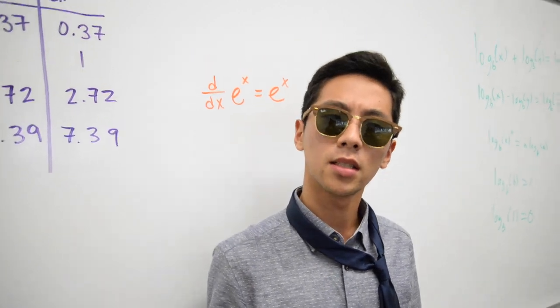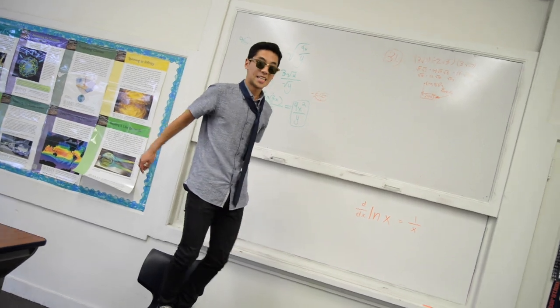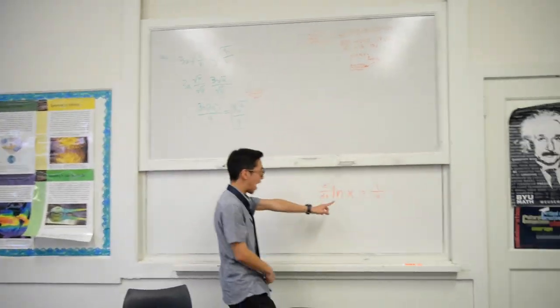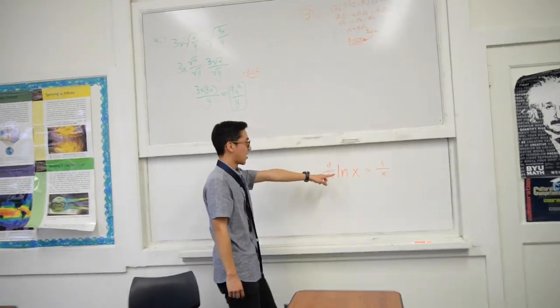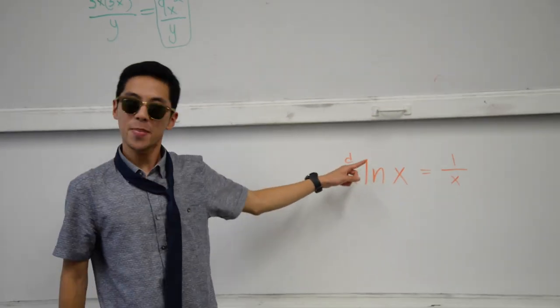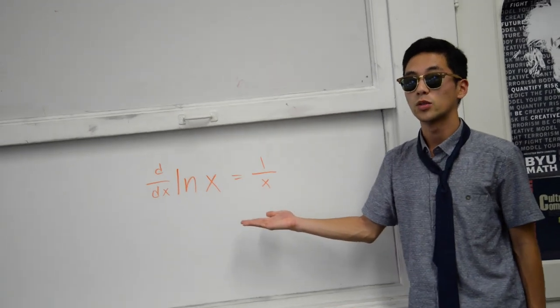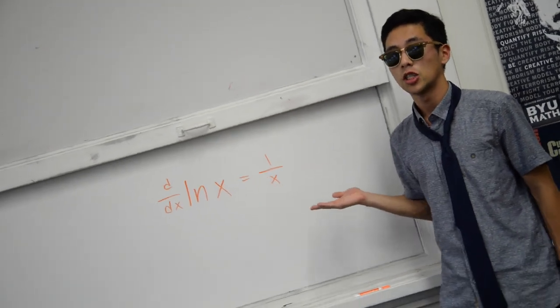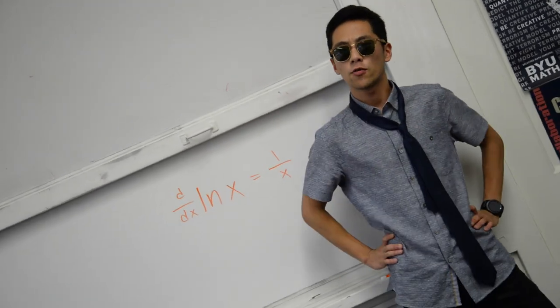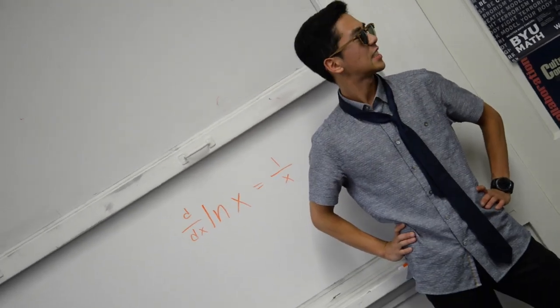That just means the derivative of e to the x is e to the x — simple, right? ln of x is the next function. Don't be afraid — we've got a plan. The derivative is always 1 over x; just remember the chain rule and you're bound for success.